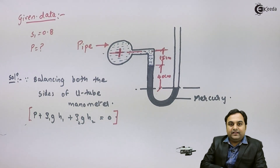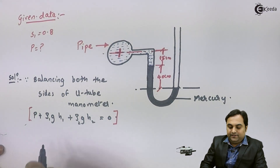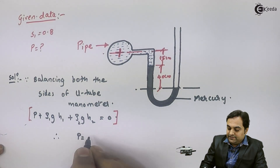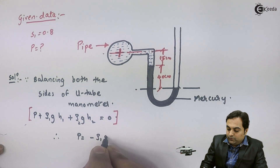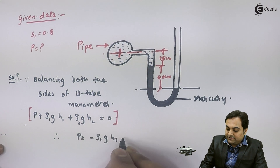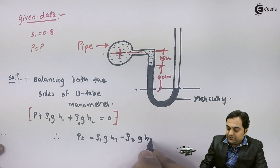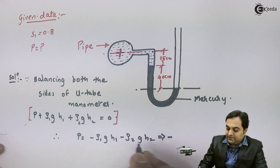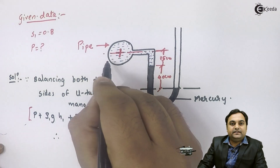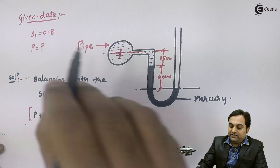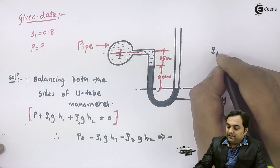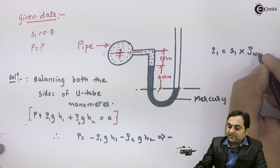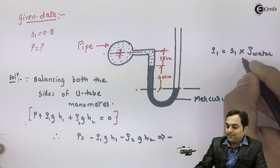To calculate pressure P: P = −rho1 × g × H1 − rho2 × g × H2. Substituting values: rho1 is the density of the fluid inside the pipe. Since its specific gravity is given, density equals specific gravity × density of water, so rho1 = 0.8 × 1000 = 800 kg/m³.